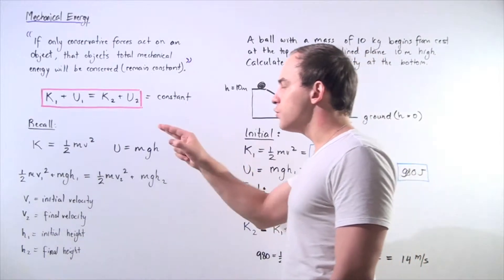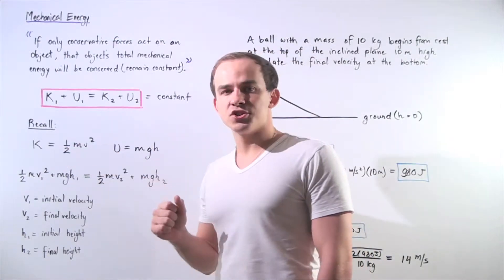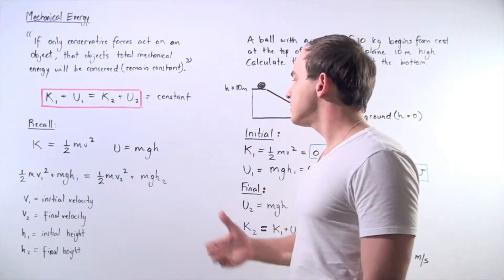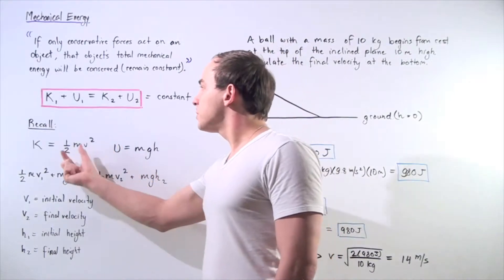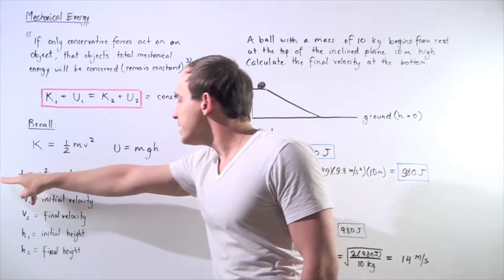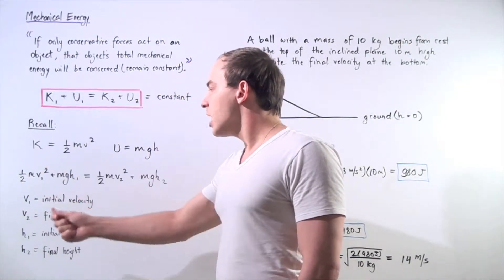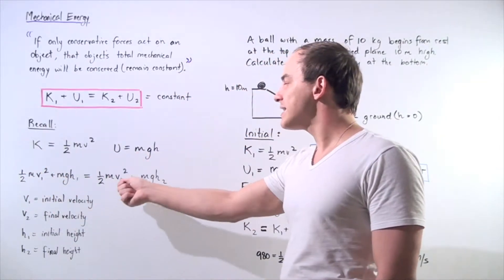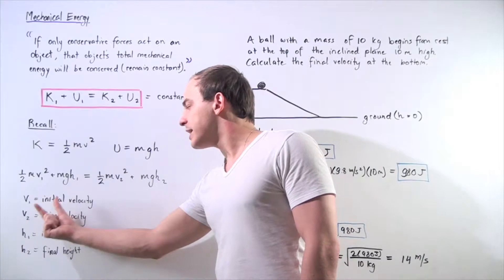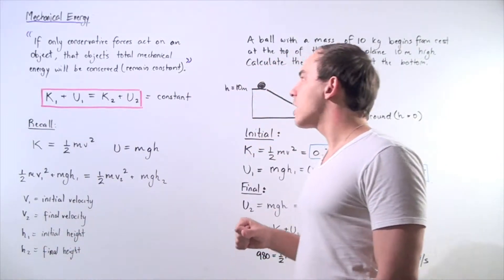Recall the following two formulas. This is the formula for kinetic energy: one-half mass times velocity squared. And this is the formula for gravitational potential energy: mass times gravitational constant times height. We can replace these variables with these formulas, and we get the following useful equation: one-half mass V1 squared plus MGH1 equals one-half mass V2 squared plus MGH2, where V1 and V2 are the initial and final velocities of the object, and H1 and H2 are the initial and final heights.